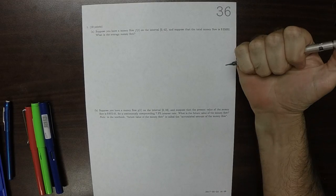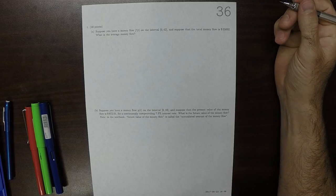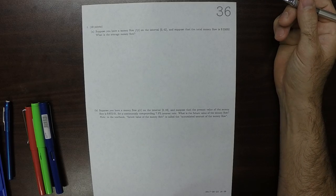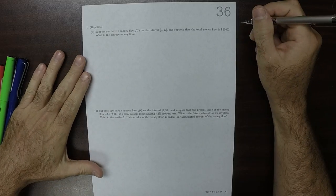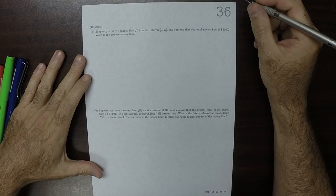This is the solution to written homework 36. So we have a money flow, a total amount. The total money flow is that.